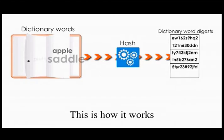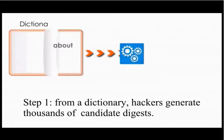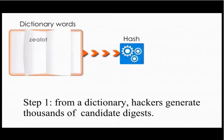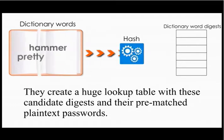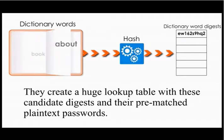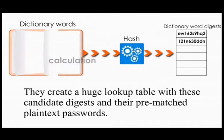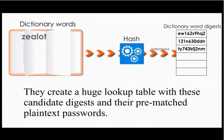This is how it works. Step 1: From a dictionary, hackers generate thousands of candidates of digests. They create a huge lookup table with these candidate digests and their pre-matched plain text passwords.